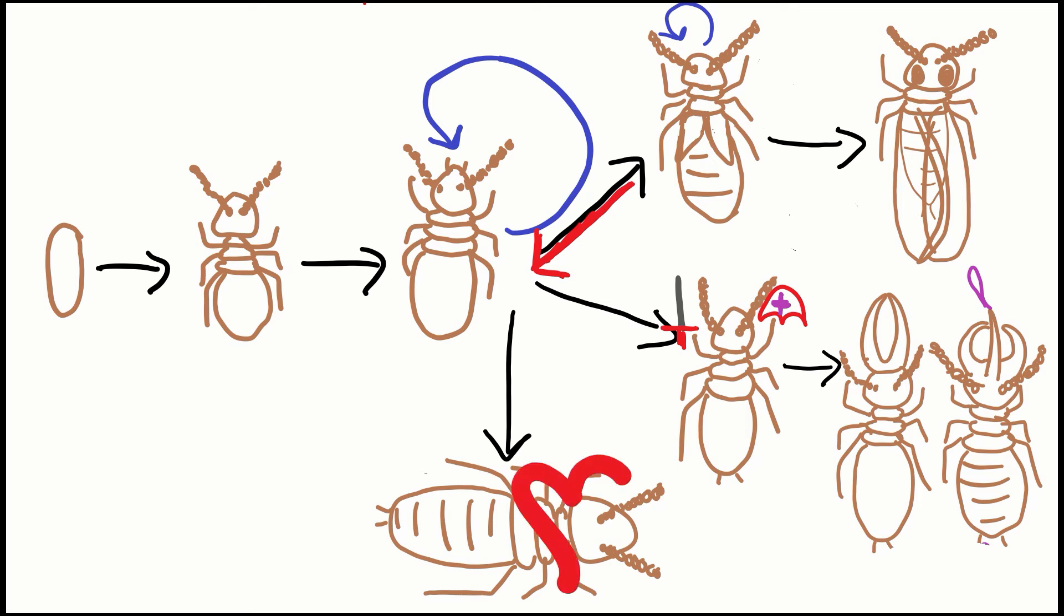If the termite molts into a neotenic reproductive replacement, it molts into a mature adult with the ability to molt, although they will not mate unless the current reproductive is dead or dying. They spend most of their time in the natal nest and will mate to save the colony from collapse, in case of emergency.